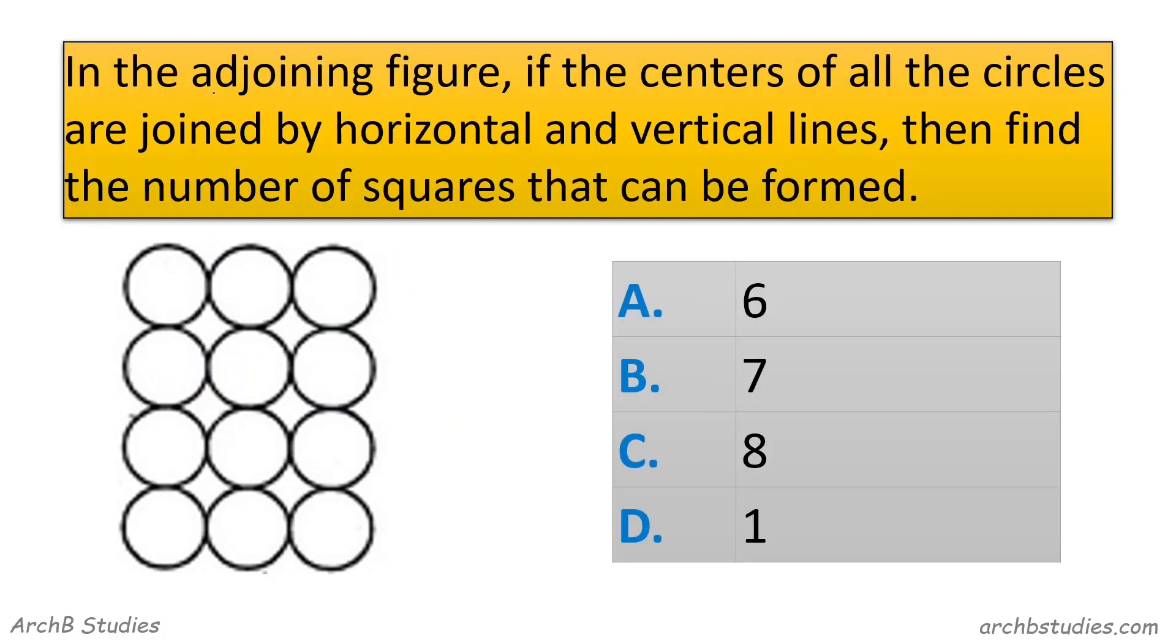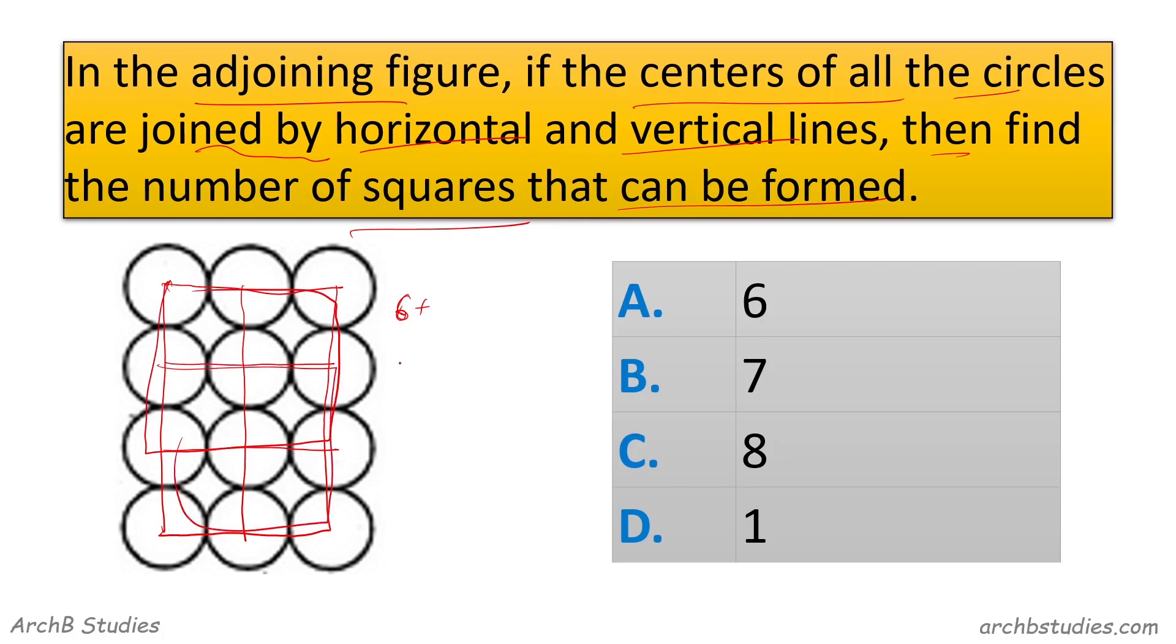So next question we have. In the adjoining figure, if the centers of the circles are joined by horizontal and vertical lines, then find the number of squares that can be formed. Okay, so in this one, number of squares. So we have 6, and 1 and 2. So 8 is the answer.